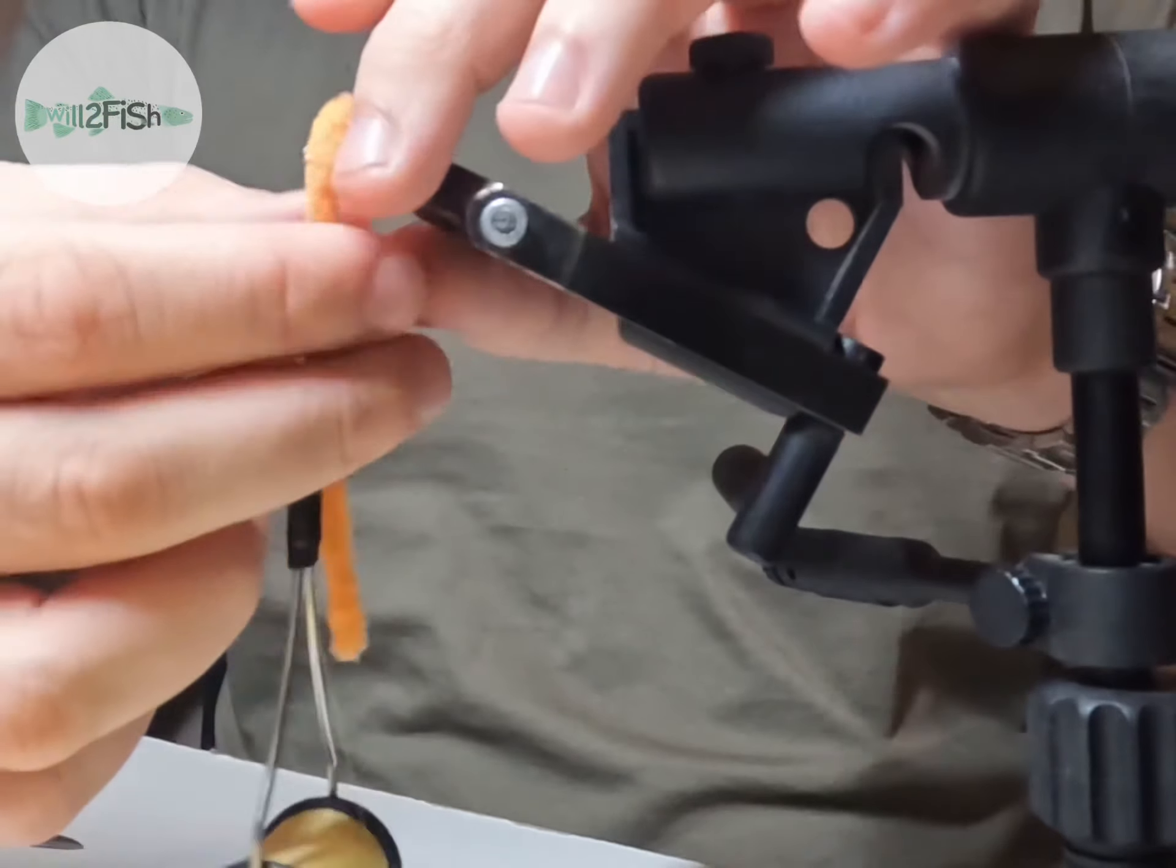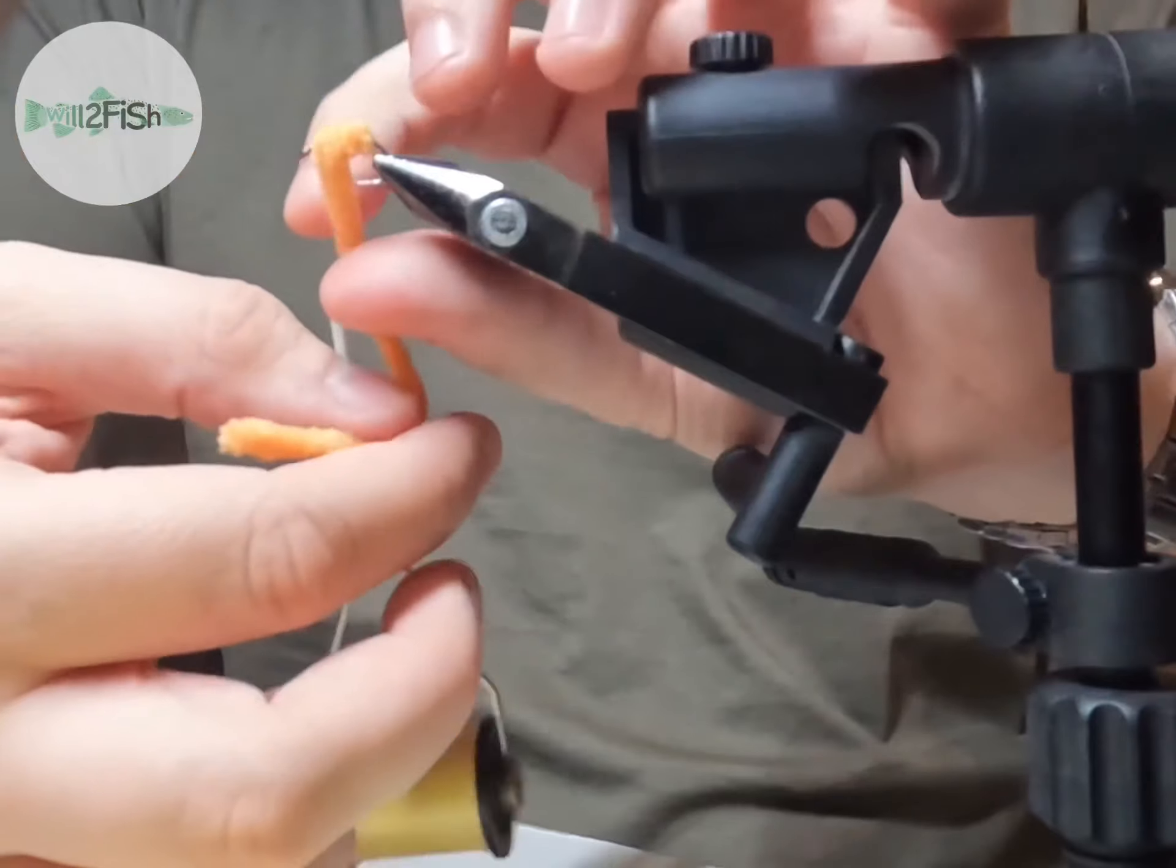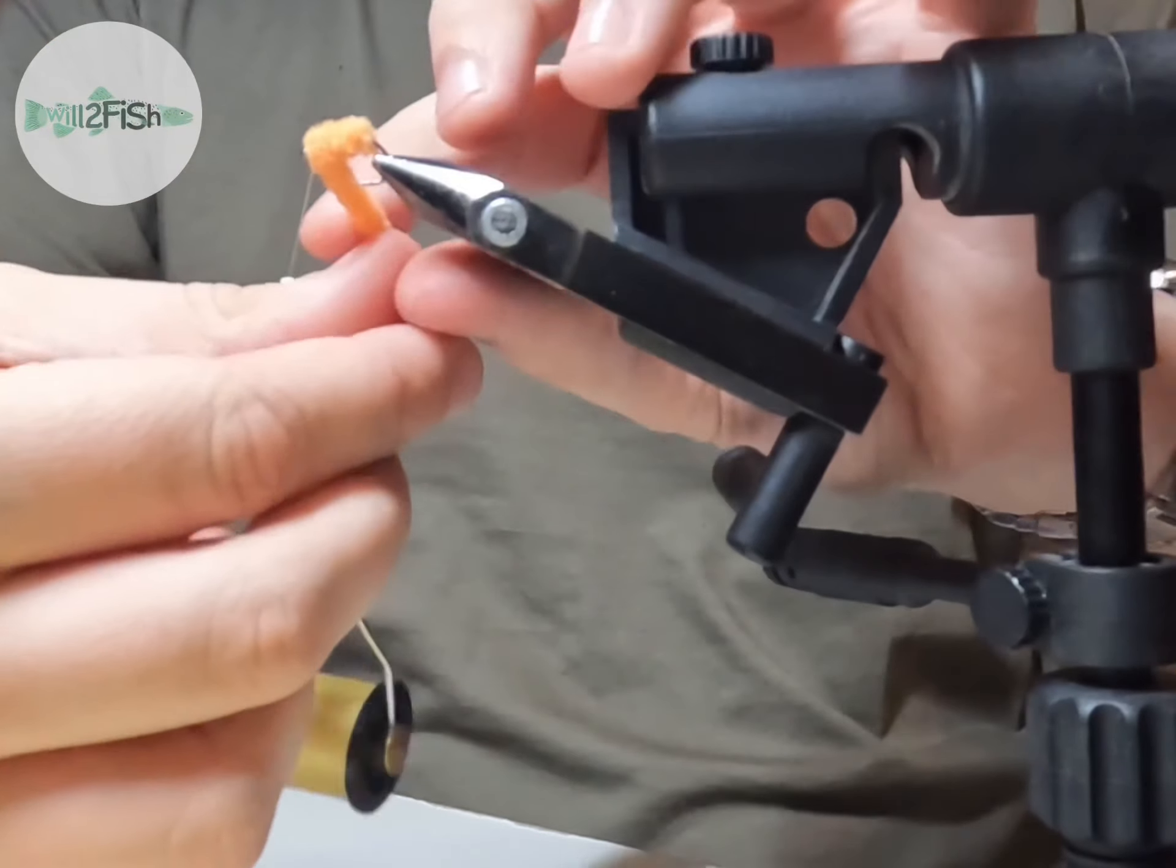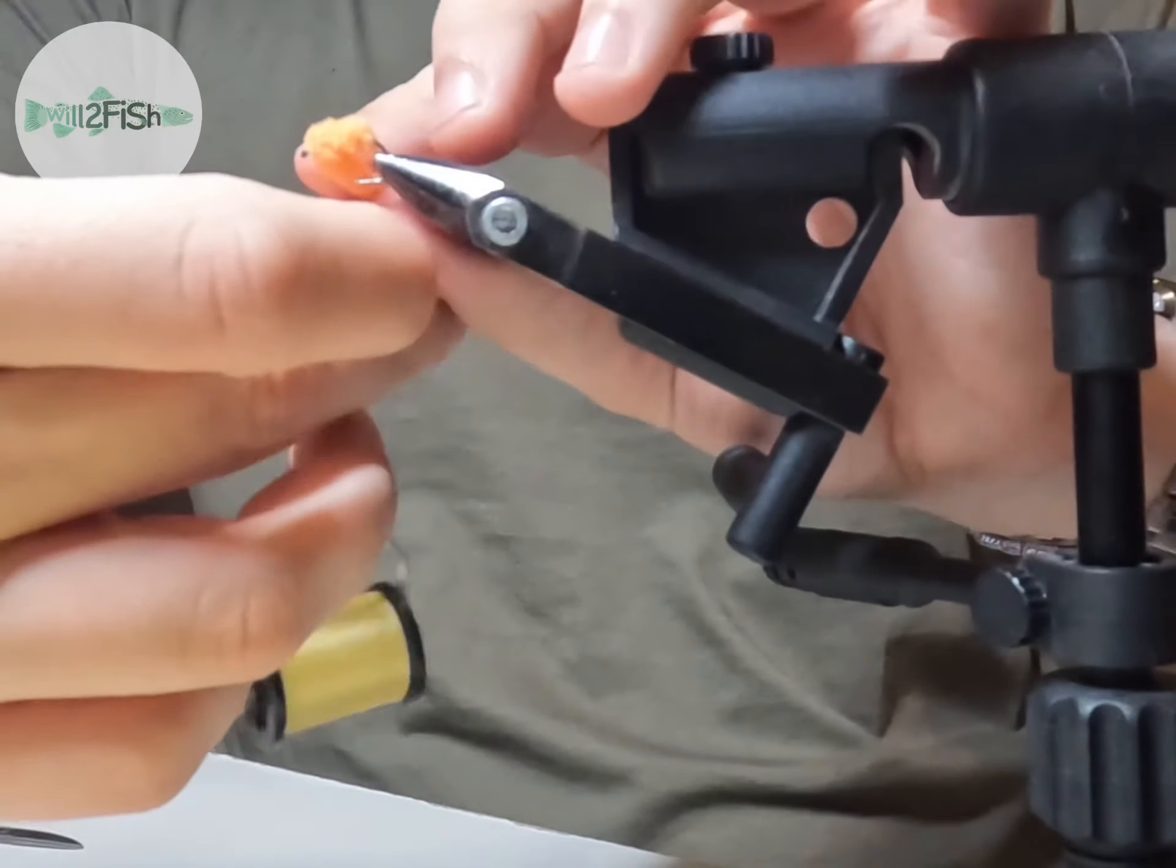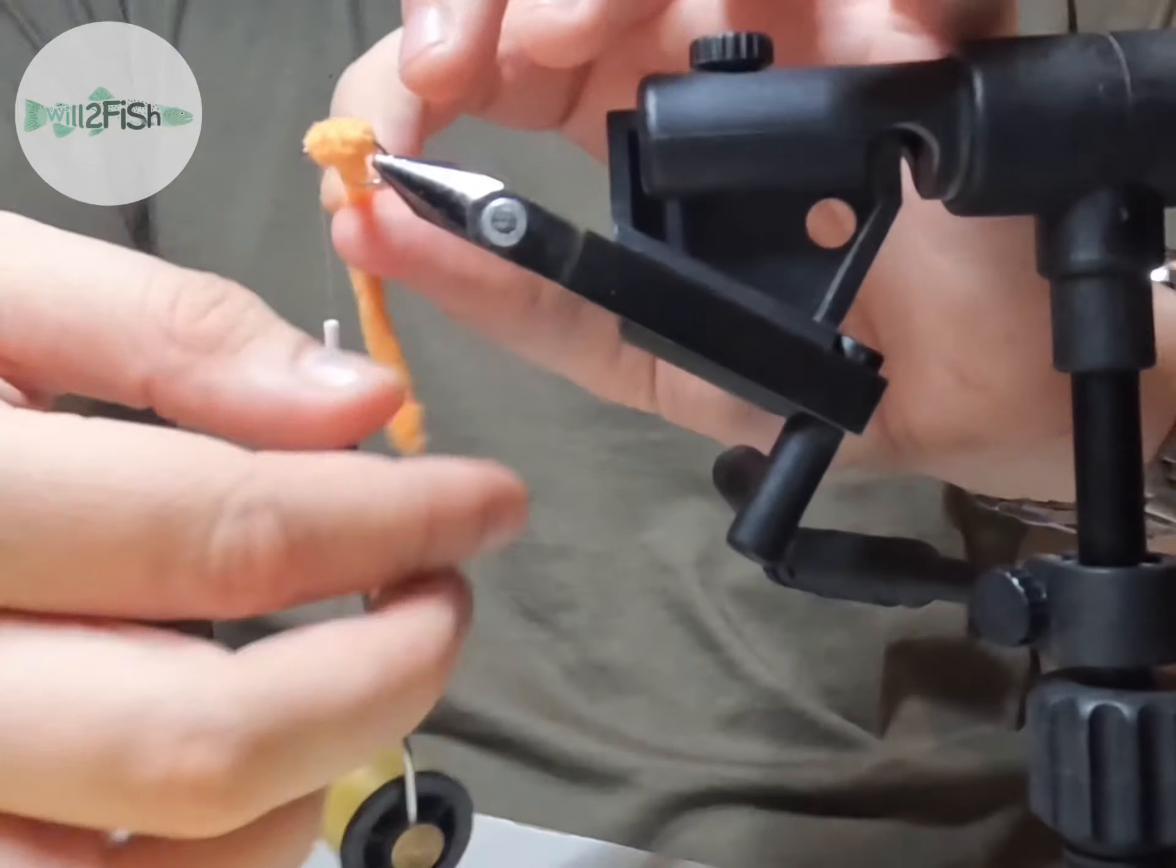And then what I tend to do is wrap it around, up the body, and then back down. And then a couple of times in the middle, just so that you create an egg-like pattern. You don't want it too flat, you want it more round, so that it does look circular like an egg.